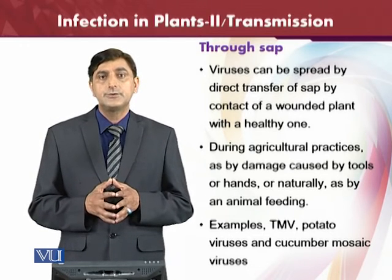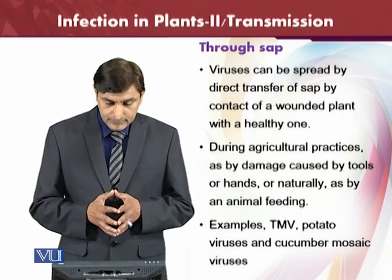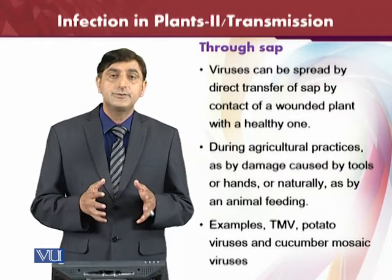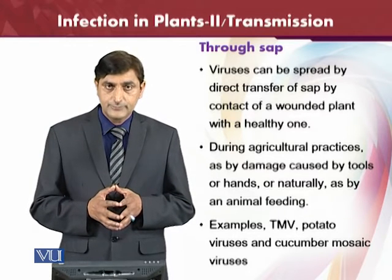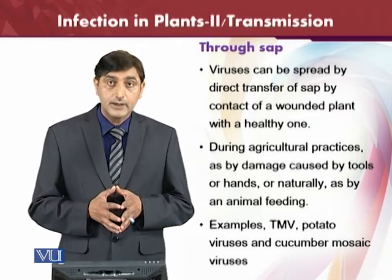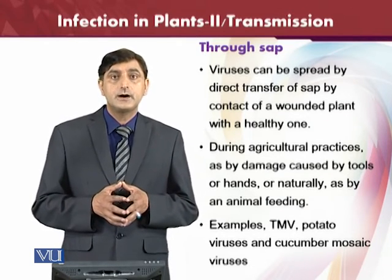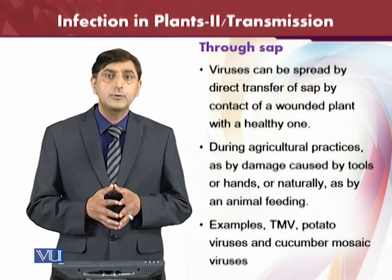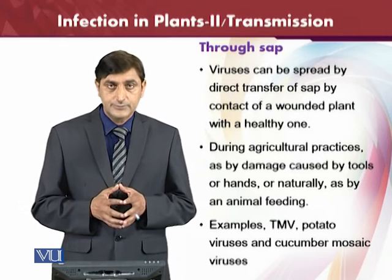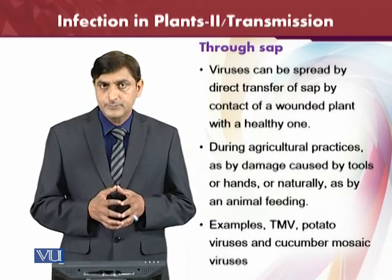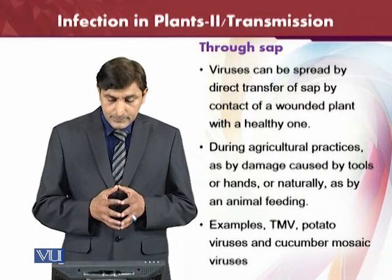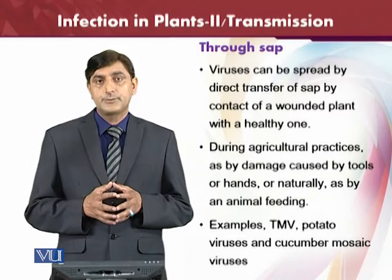Plants can also be injured by animals grazing, or through other physical means. Through sap, viruses can be transmitted physically from one plant to another — by damage caused by tools, hands, natural causes, or animal feeding. The most common example of sap transmission is the tobacco mosaic virus, the first plant virus to be discovered. The cucumber mosaic virus and potato viruses are also spread in this way.